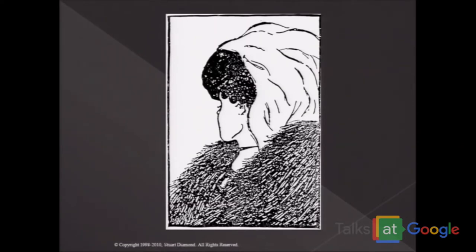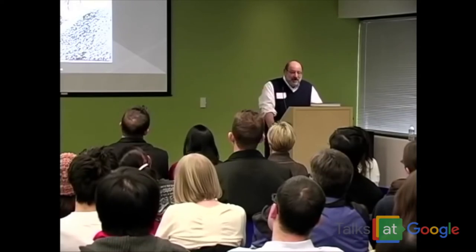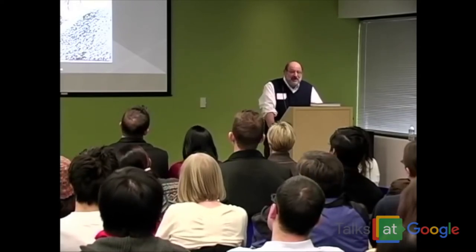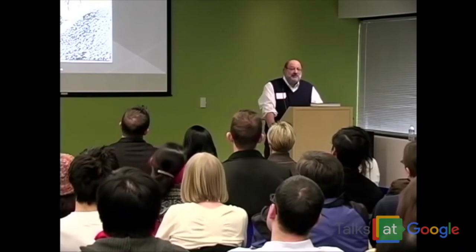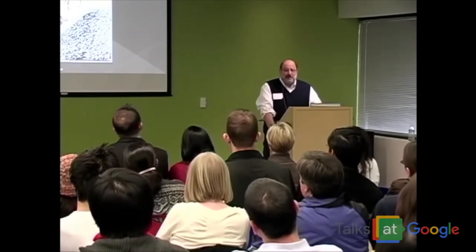I've given half of this picture — the young woman — to one half of the class, and the old woman to the other half of the class, and asked them to stare at their half for five minutes while I took it off the screen. Then I put the combined picture back on the screen. Almost nobody could see the other one. So the question is: if people have trouble seeing an image they know is there after seeing a contrary image for just five minutes, how much trouble does one culture have seeing another culture's point of view that has seen the same picture for a thousand years?